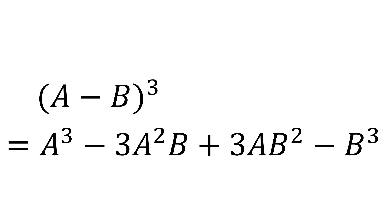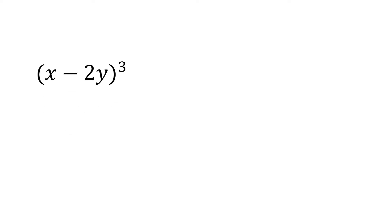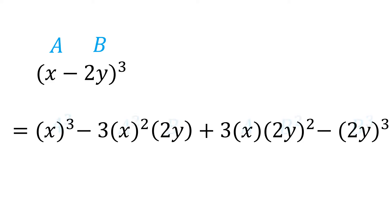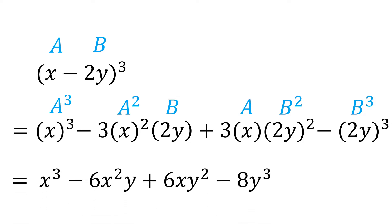For example, let's say we have (x minus 2y) cubed. In this case, we have a as x and b as 2y. Now instead of using the FOIL method, just take the cube of x, minus 3 times the product of the square of x and 2y, plus 3 times the product of x and the square of 2y, minus the cube of 2y, which is equal to x cubed minus 6x squared y plus 12xy squared minus 8y cubed.